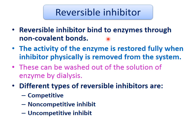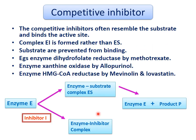Reversible inhibitors bind to enzymes through non-covalent bonds, so they can easily be removed by physical means. They can be washed out of the solution by dialysis. Reversible inhibition is again of three types: competitive, non-competitive, and uncompetitive inhibition.